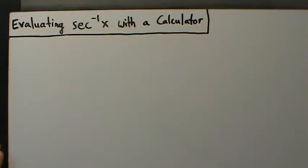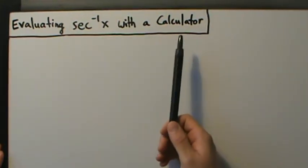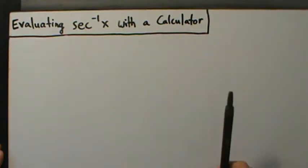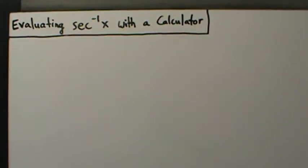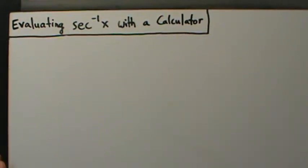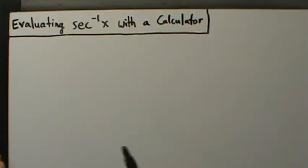In this video we're going to talk about how to evaluate the inverse secant function using a calculator. In some earlier videos we talked about evaluating inverse trig functions using the unit circle, without a calculator. That's fine for nice numbers on the unit circle, but most of the time you'll have a number that's not on the unit circle, so you'll need a calculator. Most graphing calculators don't have an inverse secant function — they typically only have inverse cosine, inverse sine, and inverse tangent.